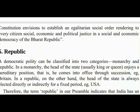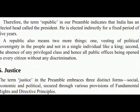5. Republic. A democratic polity can be classified into two categories: monarchy and republic. In a monarchy, the head of state, usually a king or queen, enjoys a hereditary position, i.e., he comes into office through succession, e.g., Britain. In a republic, on the other hand, the head of state is always elected directly or indirectly for a fixed period, e.g., USA. Therefore, the term 'republic' in our preamble indicates that India has an elected head called the President, who is elected indirectly for a fixed period of five years.